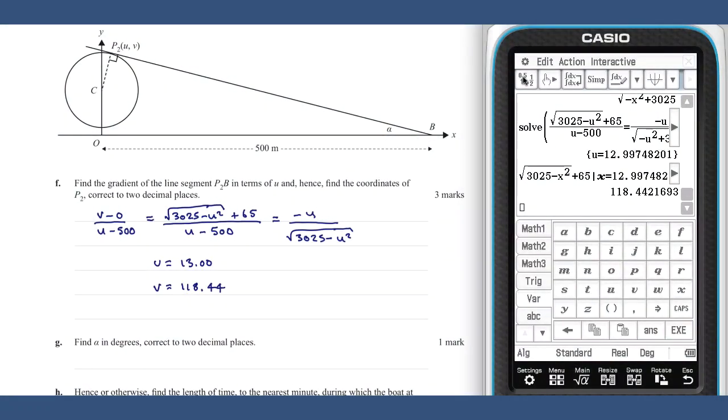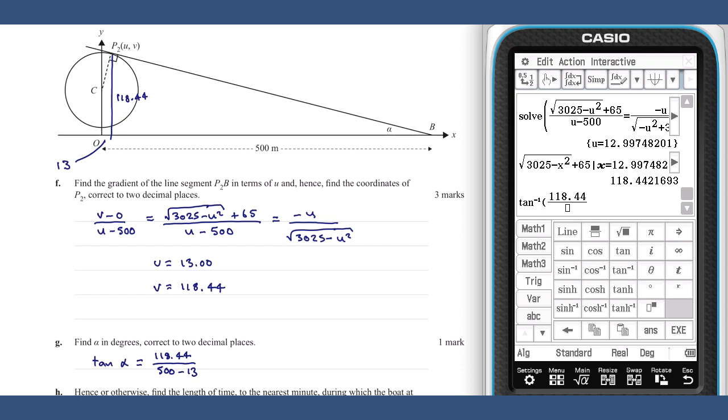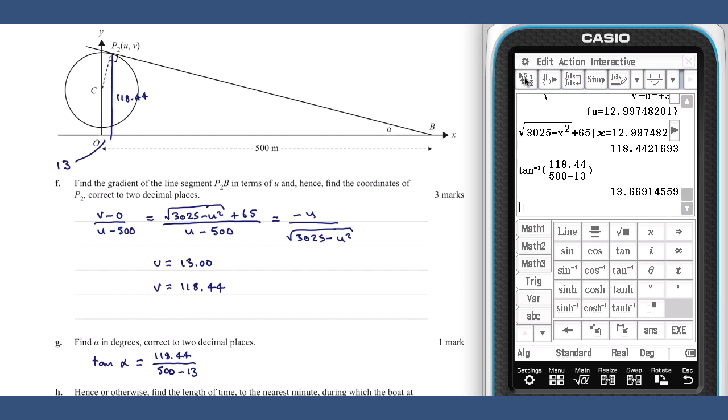Part G. With the information about the point P2 determined, we can calculate the value of alpha. We know that the height of P2 is 118.44, and the gap between the origin and P2 horizontally is 13 units. Hence, the tangent ratio involving alpha is tan alpha equals 118.44 divided by 500 minus 13, giving an alpha value of 13.67.